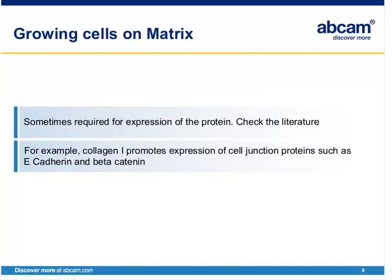Another thing you may need to consider is growing cells on a matrix. Sometimes you require matrix proteins for expression of your proteins — check the literature for this. An example is that collagen 1 promotes the expression of cell junction proteins such as e-cadherin and b-cadherin. You can buy sterile collagen 1 gel that you can layer onto the cover slip before growing the cells.